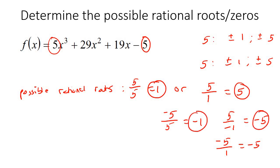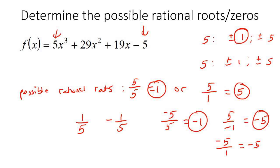You could also get fractions — for example, 1 over 5 or negative 1 over 5. So these are all the possible rational roots.